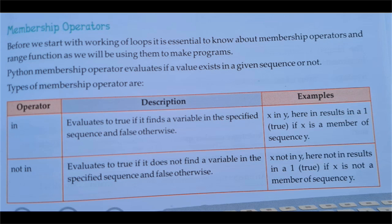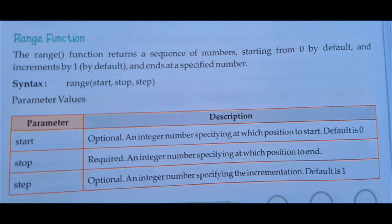There are two types of membership operators: 'in' and 'not in'. The 'in' operator evaluates to true if it finds a variable in the specified sequence, and false otherwise. The 'not in' operator does the opposite — it evaluates to true if it does not find a variable in the specified sequence, and false otherwise.